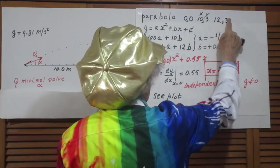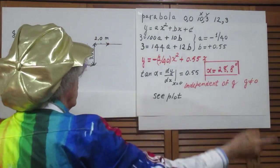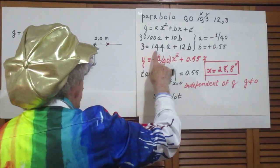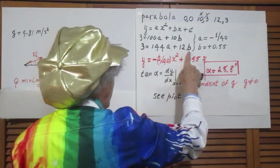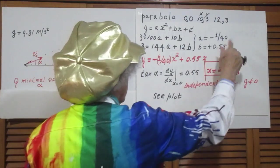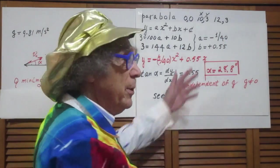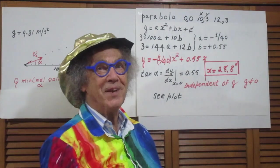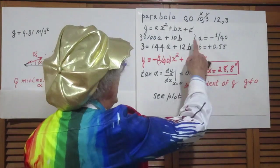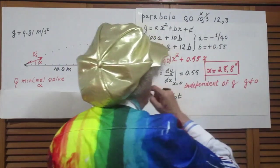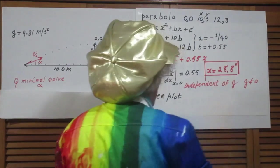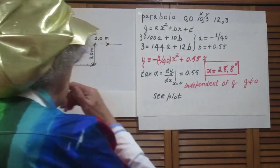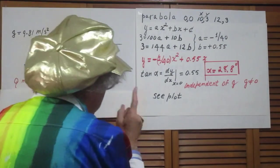You also must satisfy this condition: when x is 12, y is 3. So that gives you 3 equals 144a plus 12b. Two equations with two unknowns, piece of cake. High school physics, high school math, I should say. a equals minus 1 over 40, b equals plus 0.55.